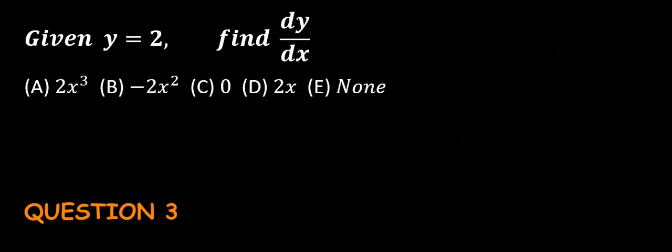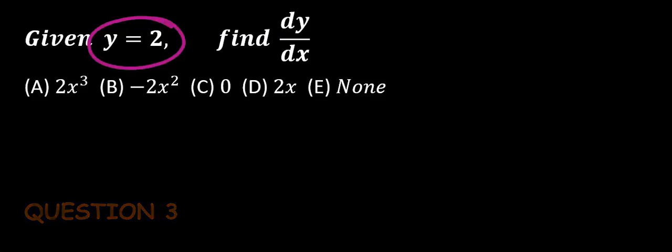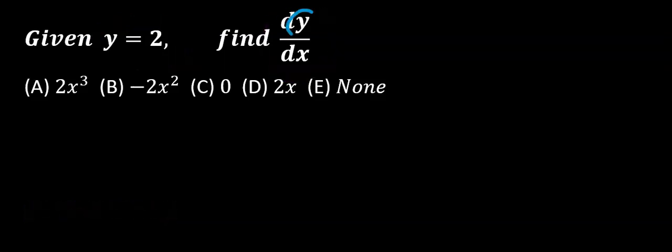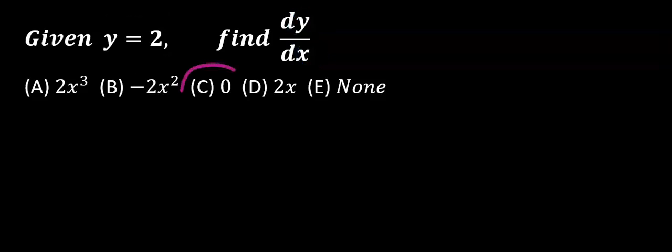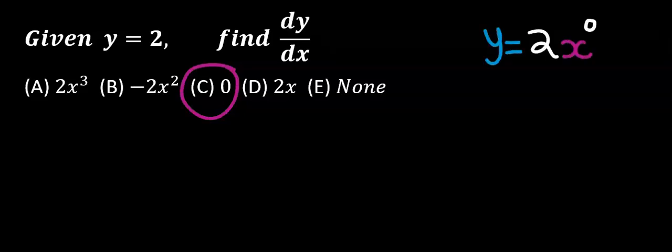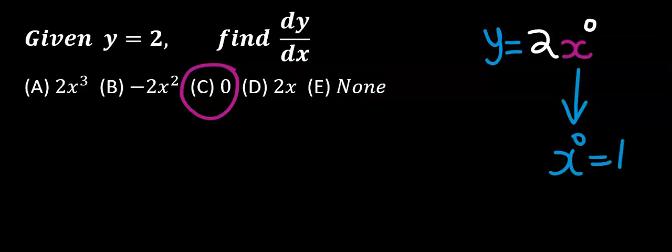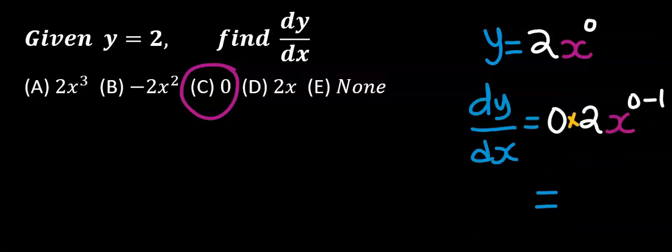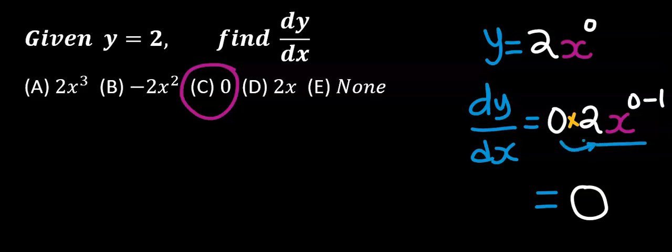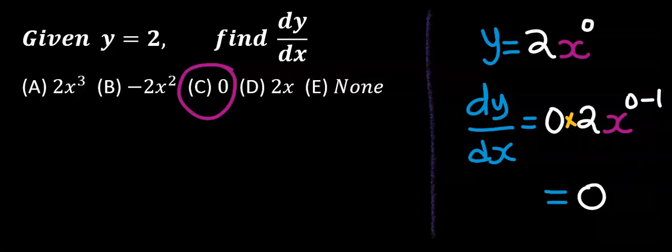Next, we are given y is equal to 2 to find dy/dx. This means we are going to differentiate y while respecting x in this function. However, there is no x in this function, hence our answer is 0. We can also restructure this as 2x to the power of 0, since anything to the power of 0 equals 1. Applying the general rule, the power 0 comes down and multiplies, reducing everything to 0. Hence our answer is still C.